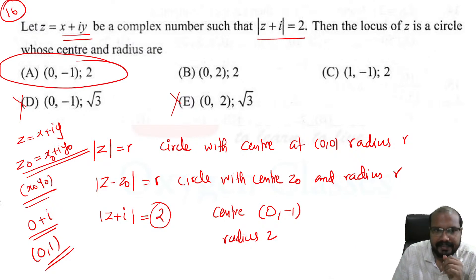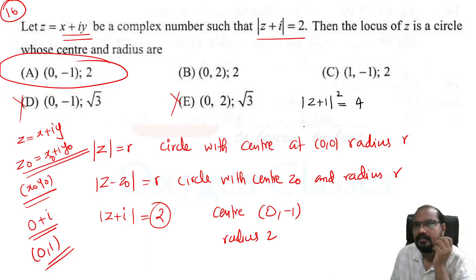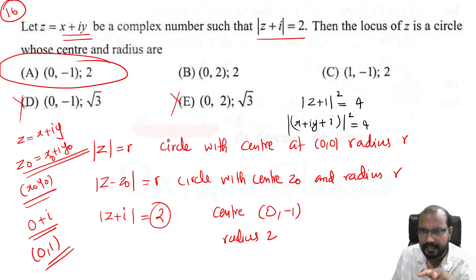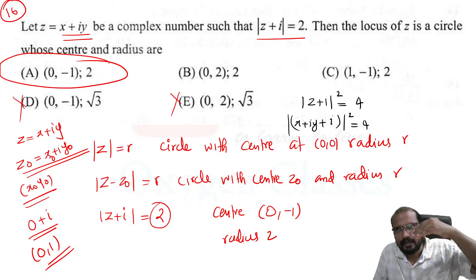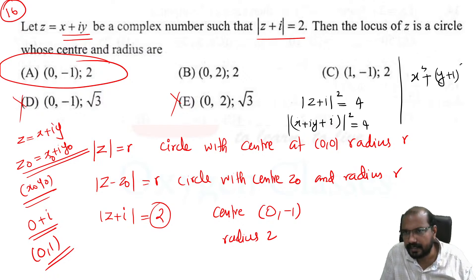To verify: |z + i|² equals 4. The modulus squared of a complex number x plus iy is x² plus y². So expanding |z + i|² gives x² plus (y + 1)² equals 4. This confirms the circle with center (0, minus 1) and radius 2.